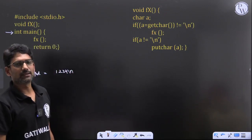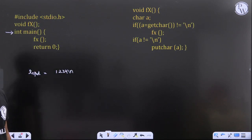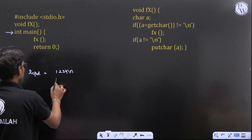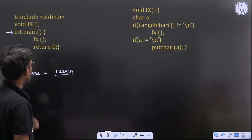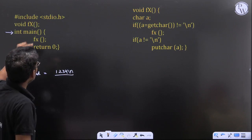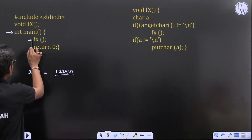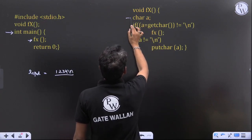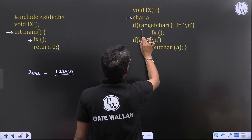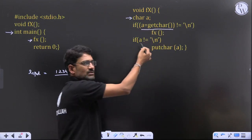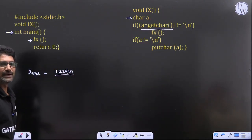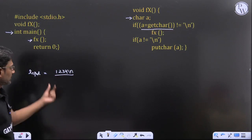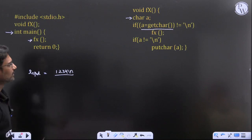We are given that the input is 1234 followed by newline for this main method through command line, means at the time of execution we can give this input. Now we are calling this function FX in the main. Here char a, while a is equal to getchar, that means it will take the given input as string.